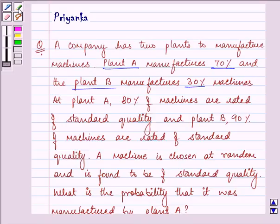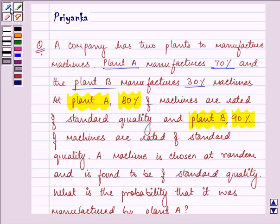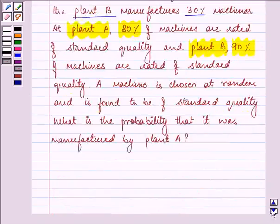At plant A, 80% of the machines are rated of standard quality and plant B, 90% of the machines are rated of standard quality. A machine is chosen at random and is found to be standard quality. What is the probability that it was manufactured by plant A?